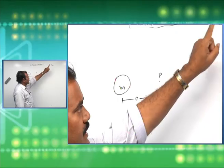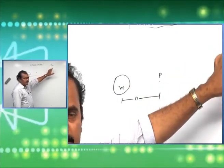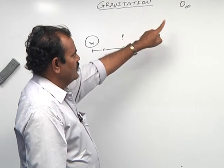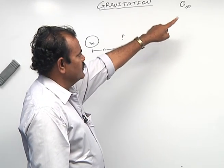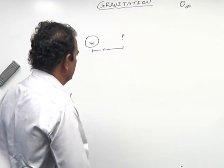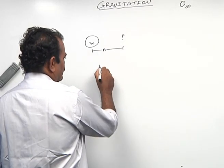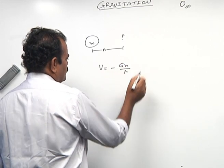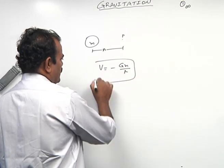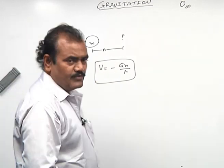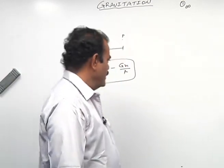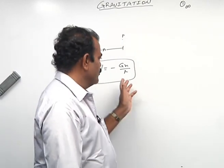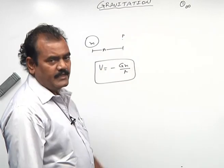Gravitational potential is the burden in bringing unit mass from infinity to a point in the gravitational field. In this case, we derived that V is equal to minus GM by r. This is V = -GM/r, and the maximum value of gravitational potential will be zero because that is possible at infinity.